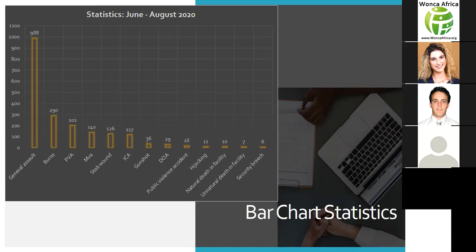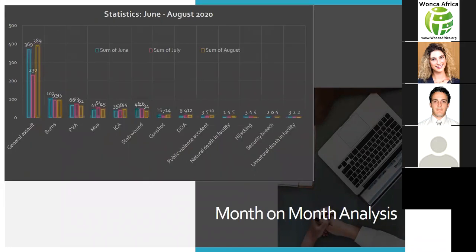Over the next few slides, we have a graphical representation of the statistics already mentioned. This slide shows a visual representation of the total number of injuries and illnesses seen by category over the three months. We've broken down each incident category into the respective months, where in the general assault category, June and August numbers were far higher, whereas for the remainder of the categories, numbers per month were similar — even taking into consideration that lockdown restrictions were higher in the first few months.